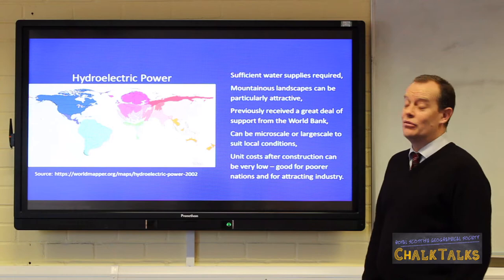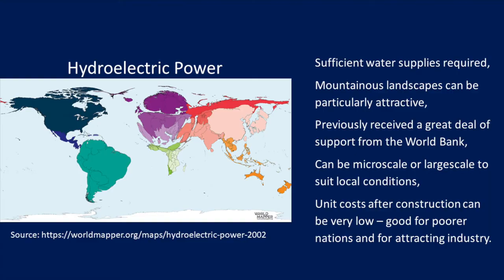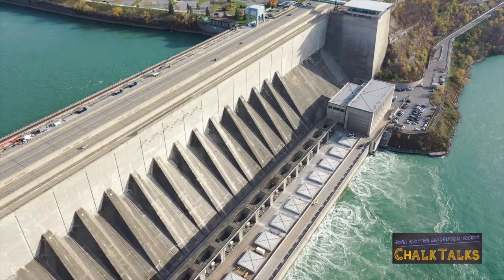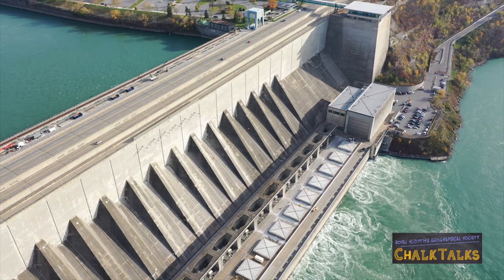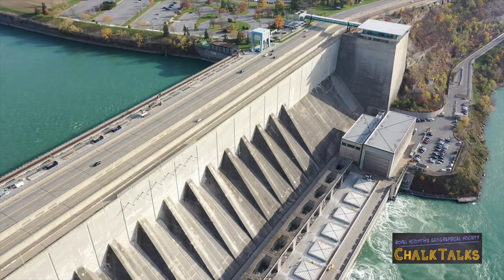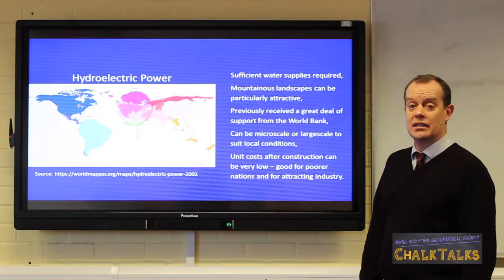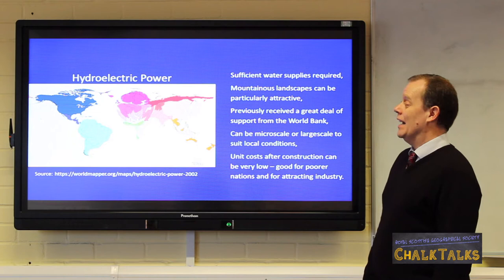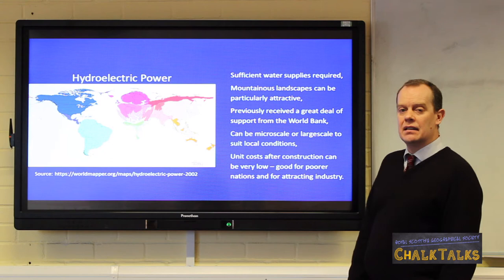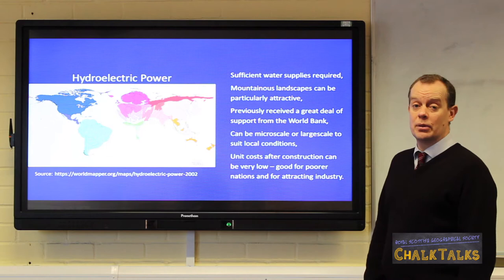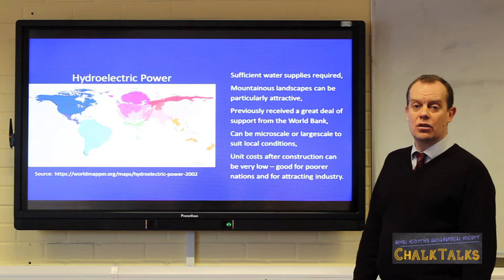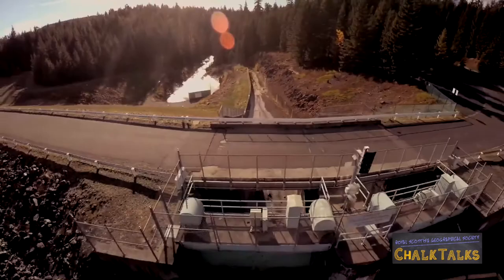This graphic represents those nations who rely heavily on hydroelectric power. This shows a strong link between physical geography and economic geography. The countries which exploit hydroelectric power require sufficient water supplies in the form of rainfall or river flow, and mountainous landscape is often attractive. Hydroelectric power schemes require funding; in the 1980s and 90s these were particularly attractive to the World Bank, allowing poorer nations to exploit the potential. Hydroelectric power can also occur on several scales — small for an individual landowner or community, or large-scale national dam building projects.